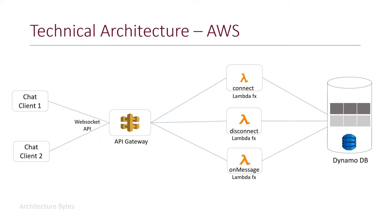This is what our technical architecture looks like. There are multiple chat clients which communicate with the API Gateway over WebSockets. The API Gateway in turn invokes microservices — in this case, Lambda functions behind it — to handle the chat messages. And there is a data store, which in this case is DynamoDB.